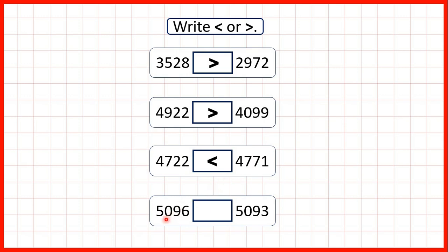And now we have 5096 and 5093. Here the thousands are the same, the hundreds are the same, the tens are the same, so we just go all the way along to the ones, and because this first number has more ones, we know that it must be larger. Now here we were comparing numbers with the same number of digits, but when we're comparing whole numbers, it's useful to remember that if a number has more digits, it will be larger.